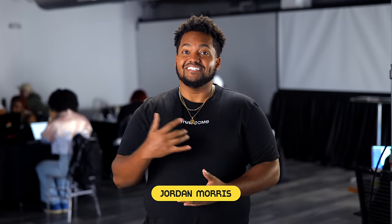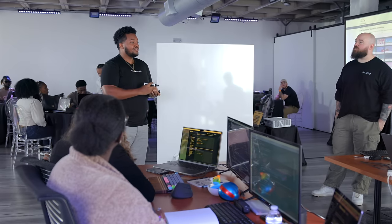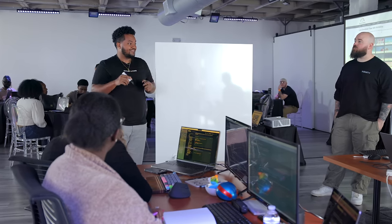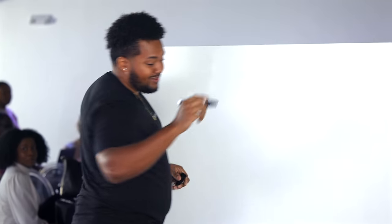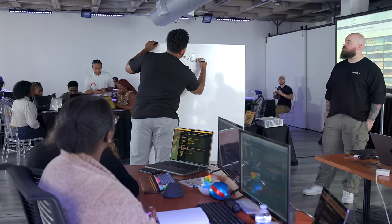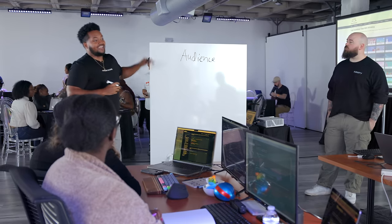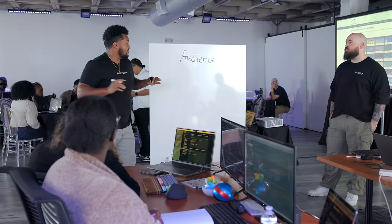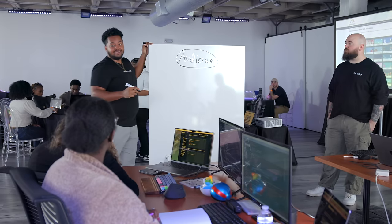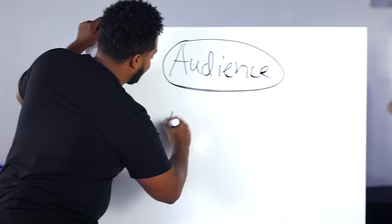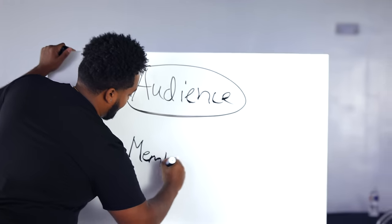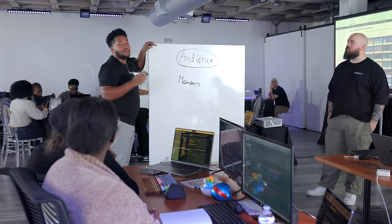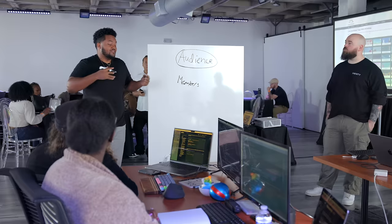My name is Jordan Morris. I'm based in Atlanta, a senior software engineer at MailChimp. MailChimp is an application that gives customers the ability to create email and SMS campaigns and use those campaigns to convert into revenue. The bread and butter of MailChimp is the audience — every single campaign is going to stem from an audience. Once you create your audience, that's how you manage your SMS, your email campaigns, your email forms, all of that.